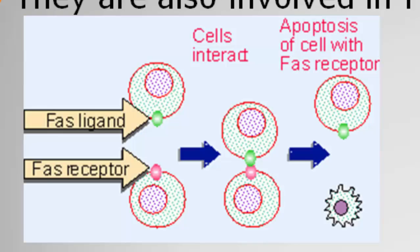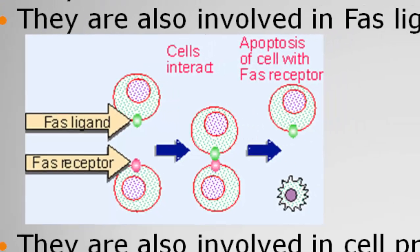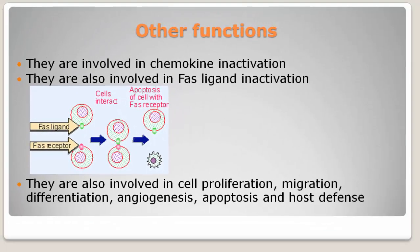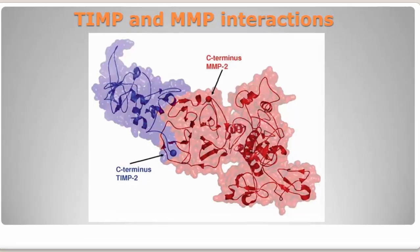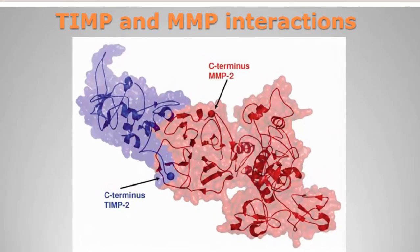MMPs are also involved in cell proliferation, migration, differentiation, angiogenesis, apoptosis, and host defense. Matrix metalloproteinases are very tightly regulated — they cannot be overexpressed or underexpressed, as they are very essential. They are tightly regulated by endogenous tissue inhibitors of metalloproteinases (TIMPs).